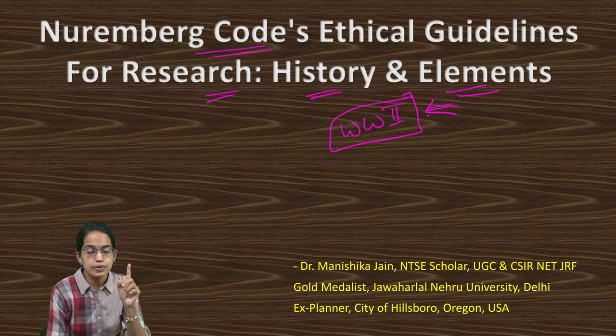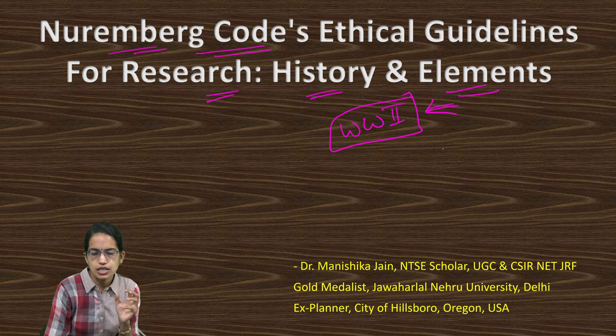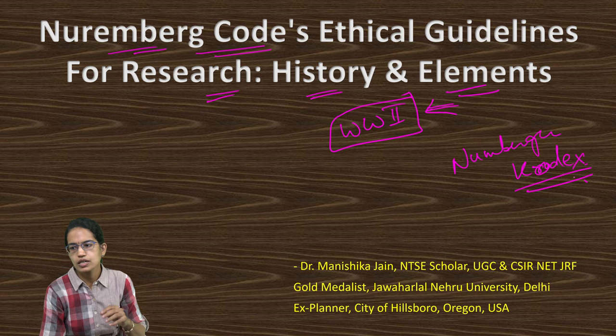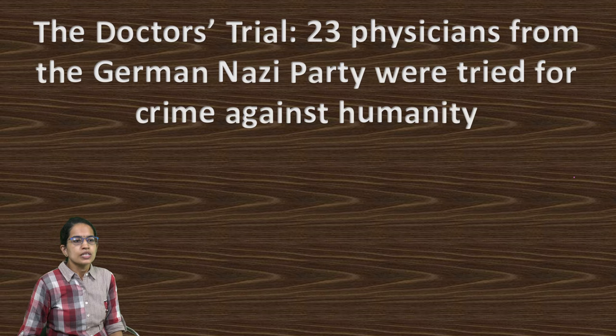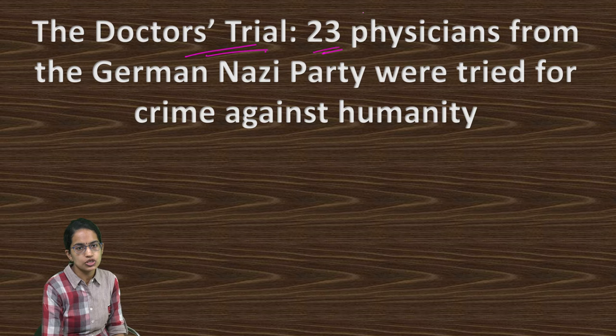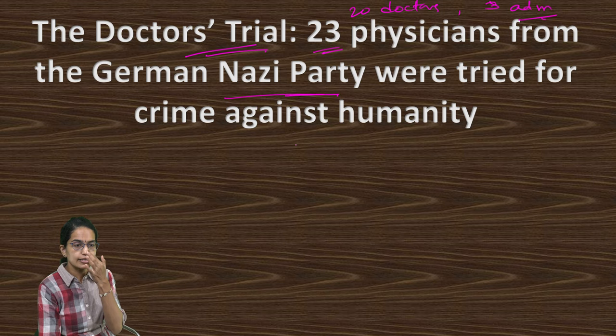The code derives itself from a German word, the Nuremberg Codex, and focuses on the trials resulting from the experiment done in the U.S. versus the Brandt case. Any unnecessary pain or suffering to an individual must be avoided. This was called the Doctor's Trial. There were 23 people — 20 doctors and 3 administrators — from the German Nazi party who were tried against crimes against humanity.